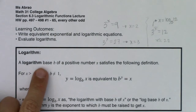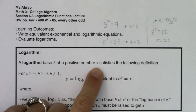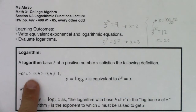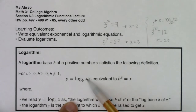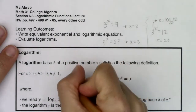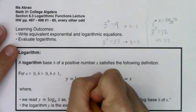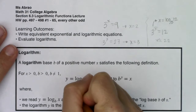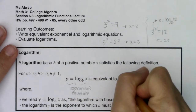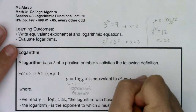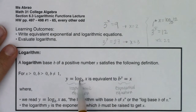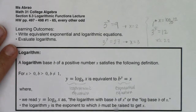For a logarithm, we have a logarithm of base b of some positive number x that satisfies the following definition. As long as your argument is positive, and your base is positive and not equal to 1, you have: y equals log base b of x is equivalent to b to the y equaling x. We refer to the left as a logarithmic equation and the right as an exponential equation.